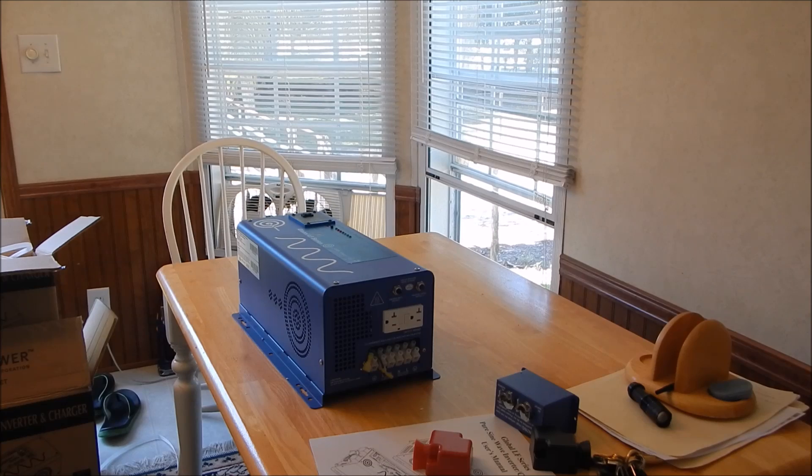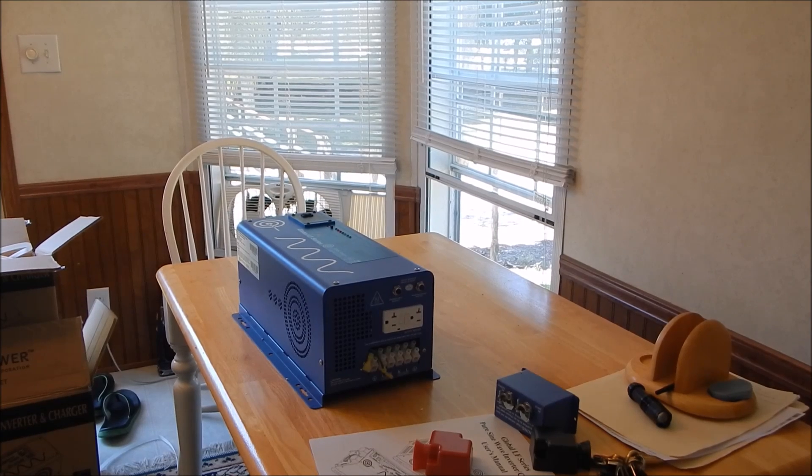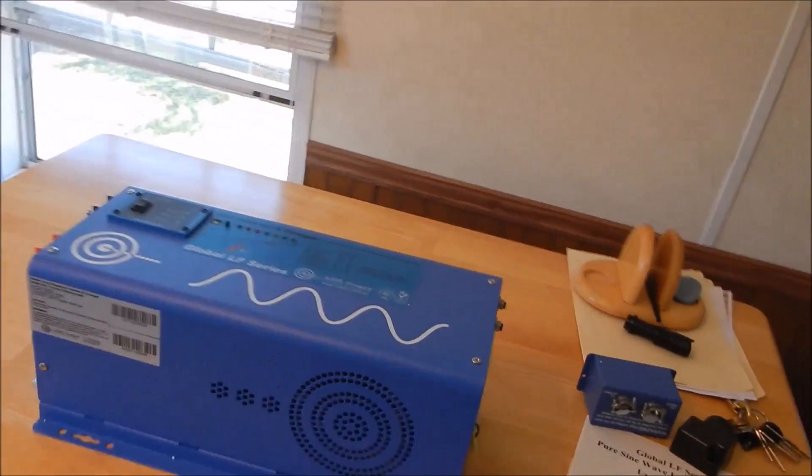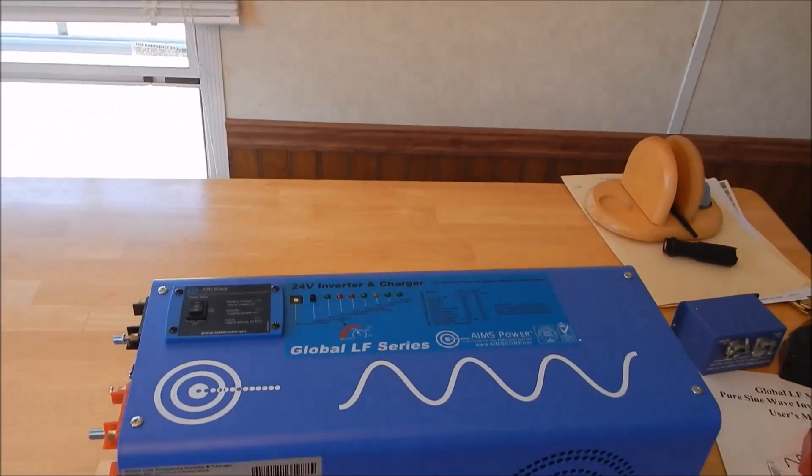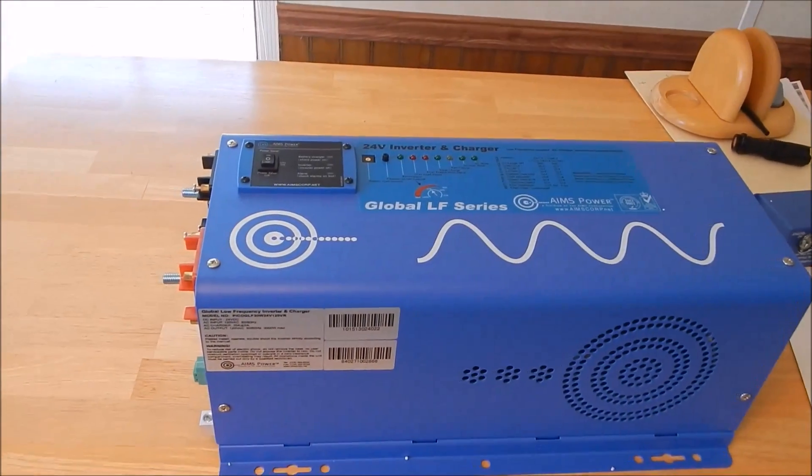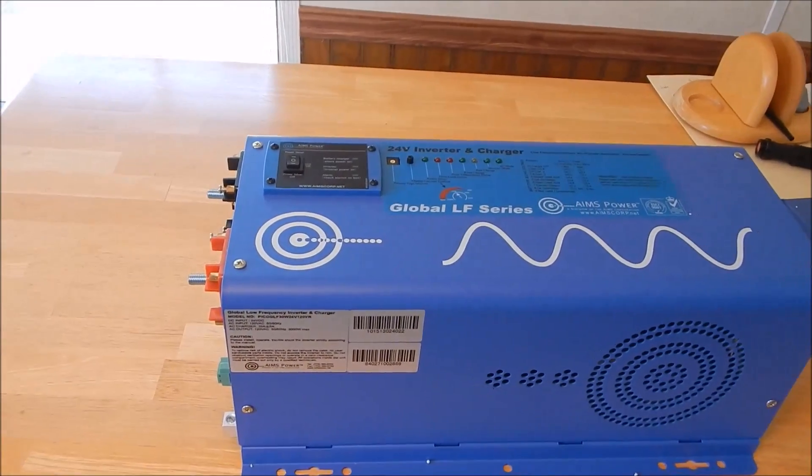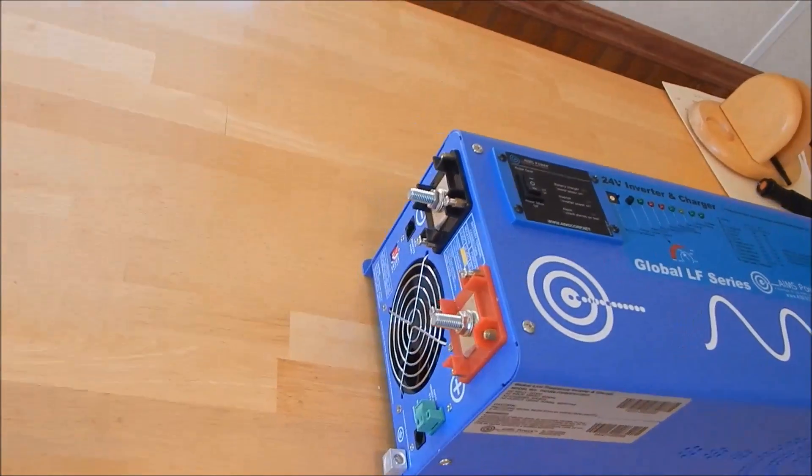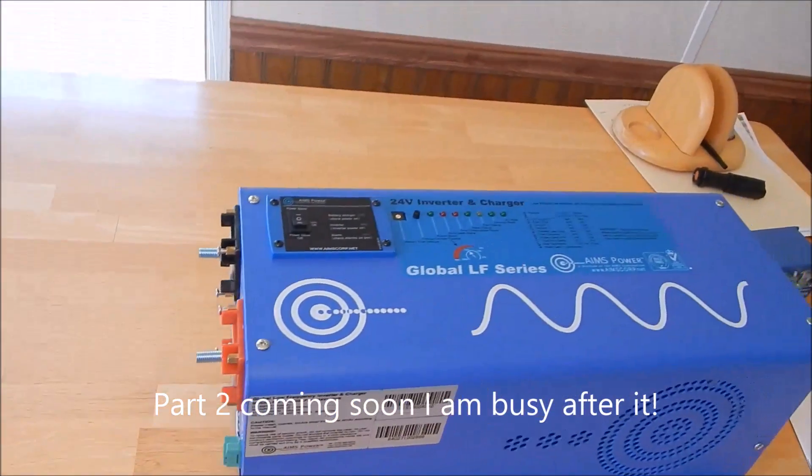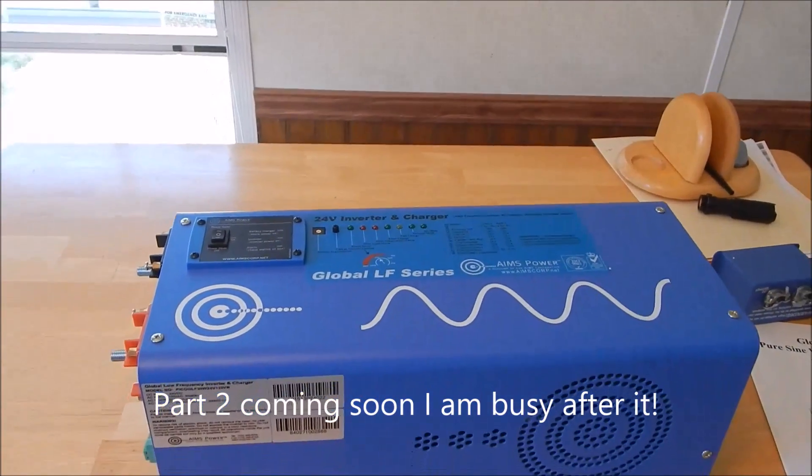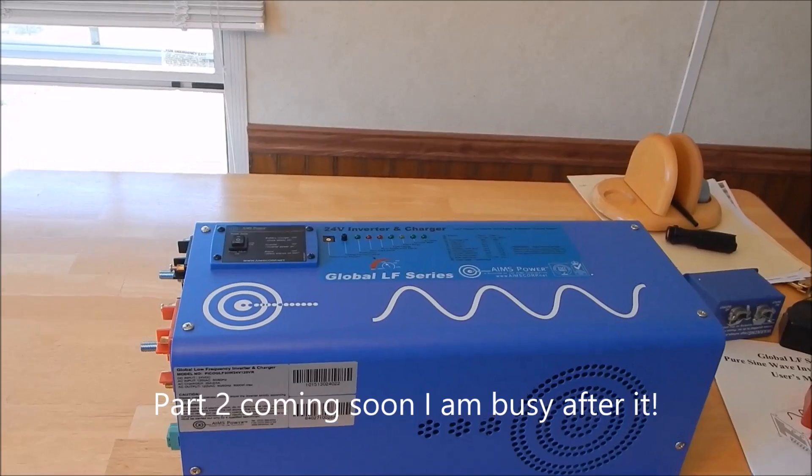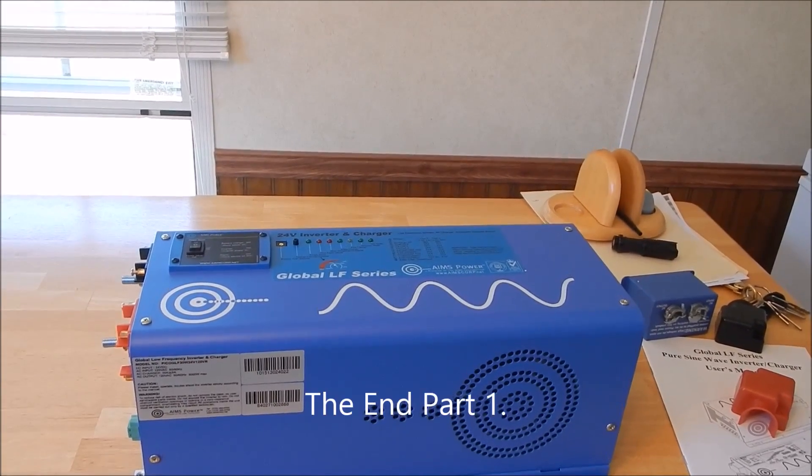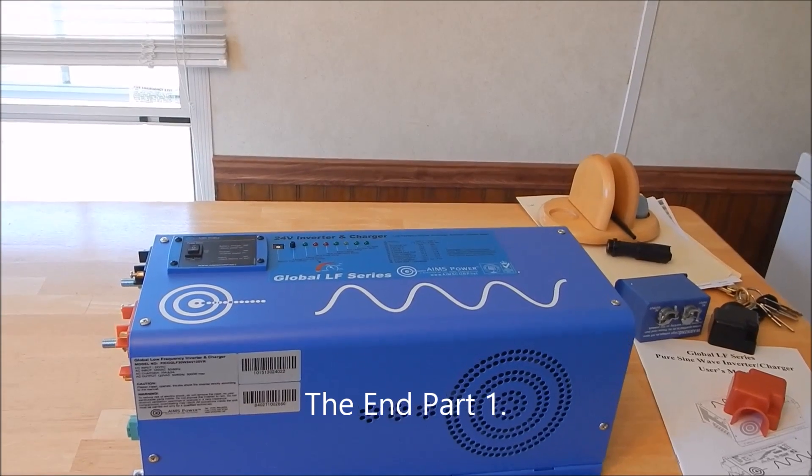So anyway, this is part one of the switchover to 24 volts with my Ames 3000-watt global series—sorry, I just kicked the tripod—24-volt 3000-watt inverter. I'm going to have to configure it all up. And probably by the time I get done filming this, my batteries will be on float and I'll disconnect them. So that's it. That's part one. There will be more coming. Thanks for watching. Over and out for now.